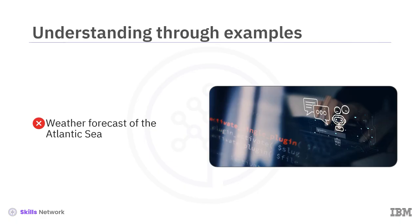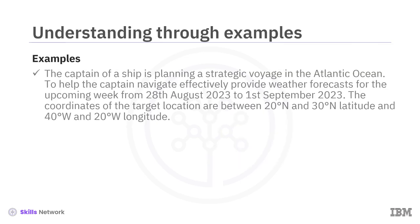The captain needs to define the context to include details such as the intended location for the weather forecast in latitude and longitude and the time range for prediction. For example: 'The captain of a ship is planning a strategic voyage in the Atlantic Ocean. To help the captain navigate effectively, provide weather forecasts for the upcoming week from 28th August 2023 to 1st September 2023. The coordinates of the target location are between 20°N and 30°N latitude and 40°W and 20°W longitude.'